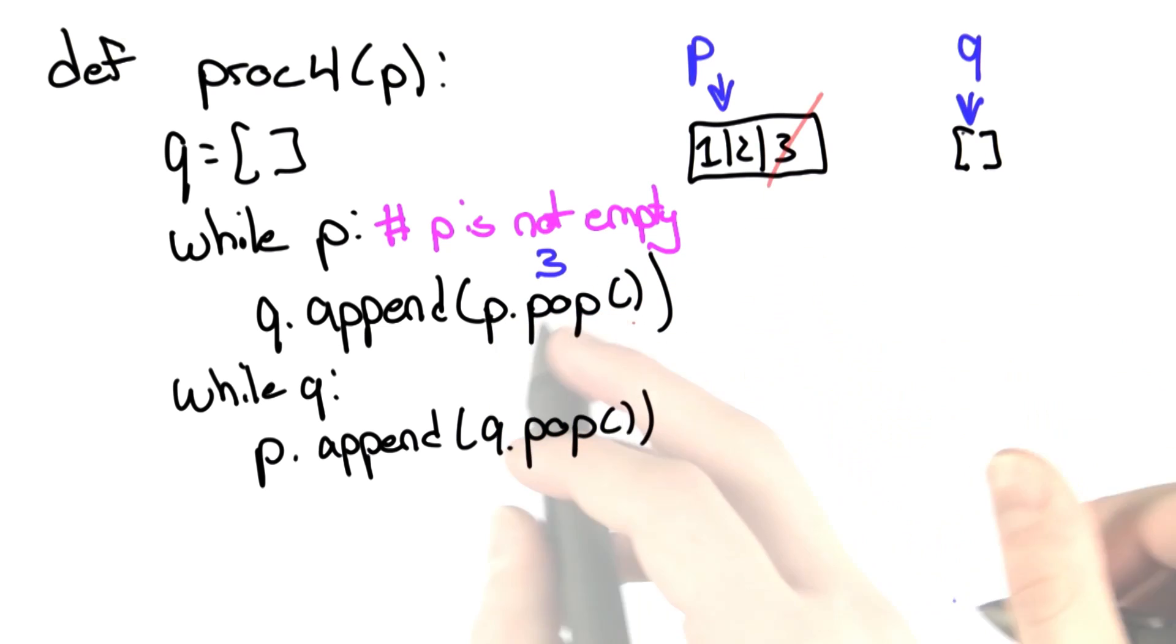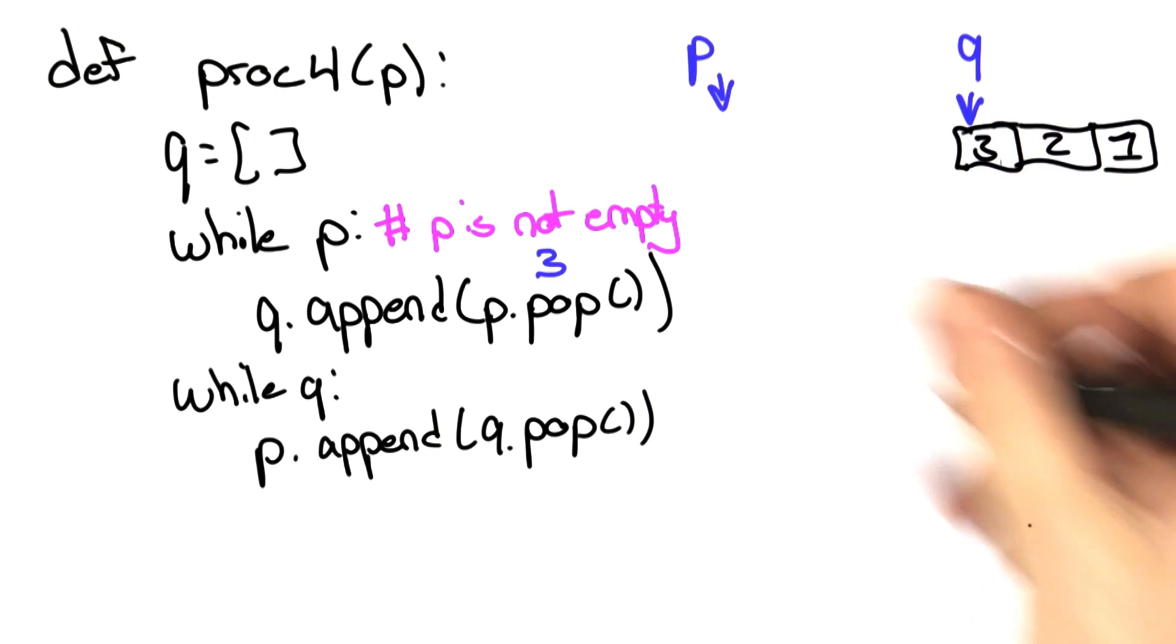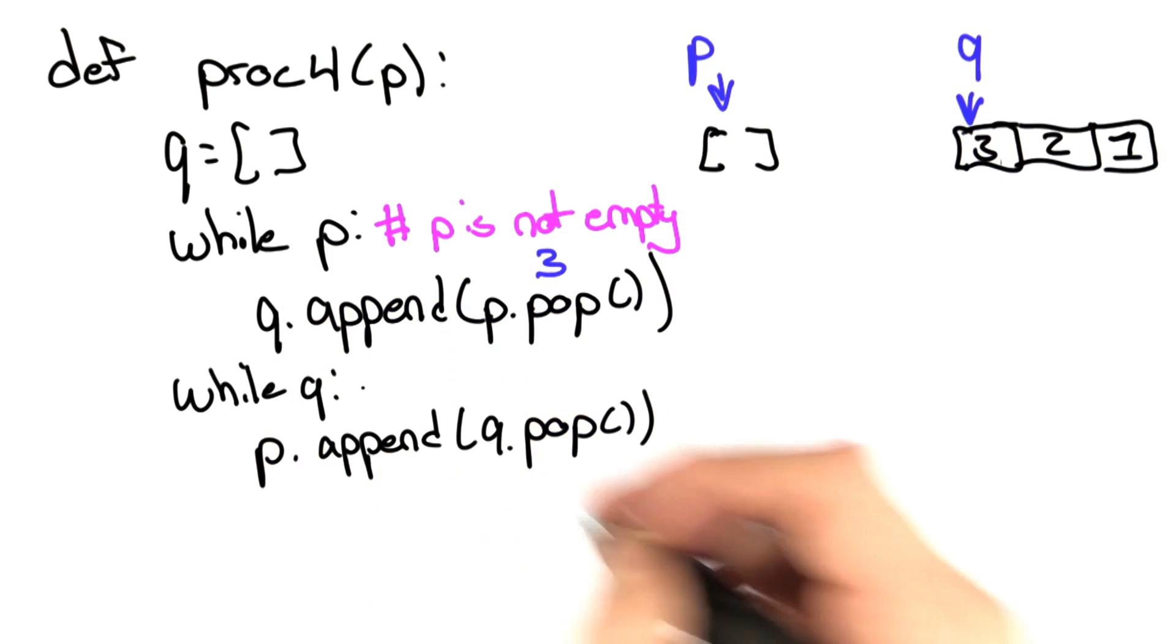It's going to pop off 3, and then I'm going to append that on the q. This is going to continue until we have the reverse of the previous list here, and p is empty, which I'll just symbolize with that.